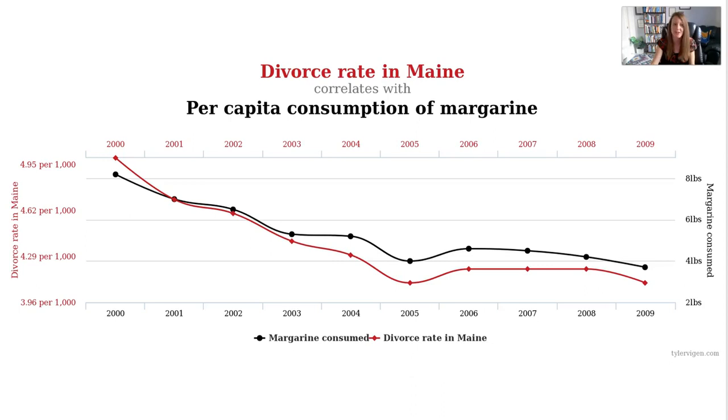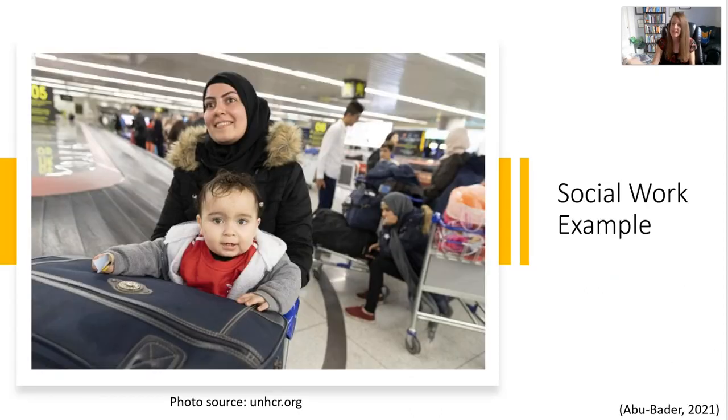You have a correlation here but not a causation. To take another more appropriate social work example, let's imagine we worked at a refugee resettlement agency and you notice that the clients who had more English proficiency were also less anxious about finding a job. I actually had some volunteer experience as well as an MSW internship at a refugee resettlement agency and I definitely noticed this connection as well.